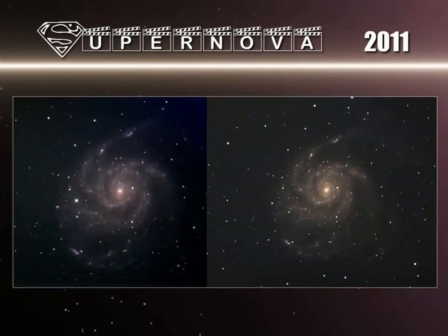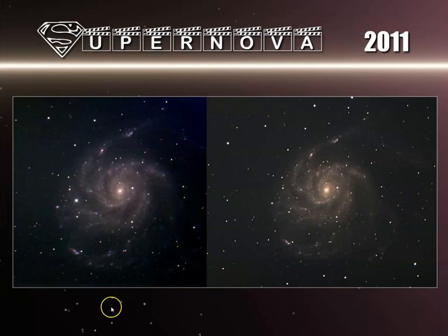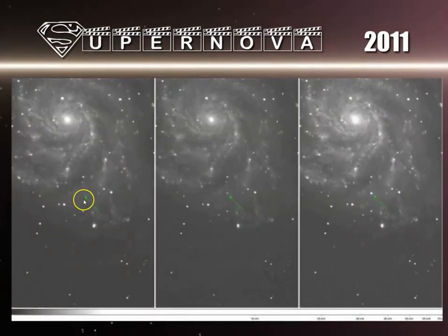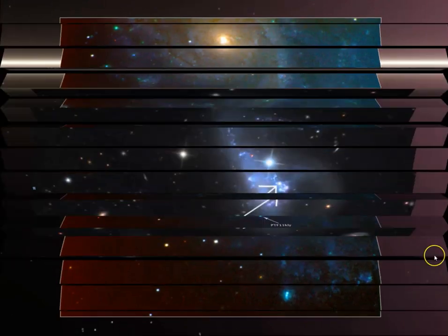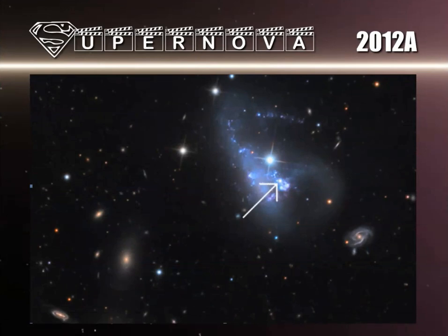Let's see how good of supernova hunters you are. Between 1987 and 2011 many supernovas were detected. The image on the left is the night after; the image on the right is the one before — there it is. Here's a false-color image of that celestial object, and the supernova 2012A — the arrow gives it away.